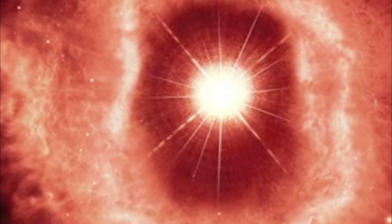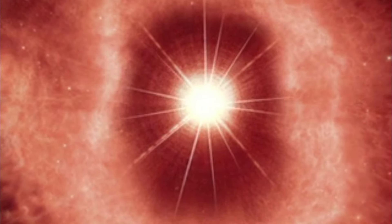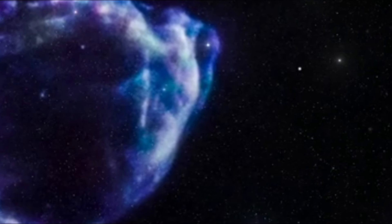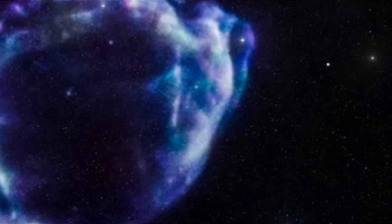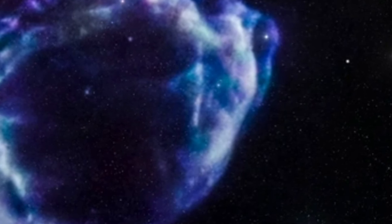The supernova, SN 1987A, was a core-collapse supernova, which means that the remains of the explosion, which get highly compact, formed either a black hole or a neutron star.